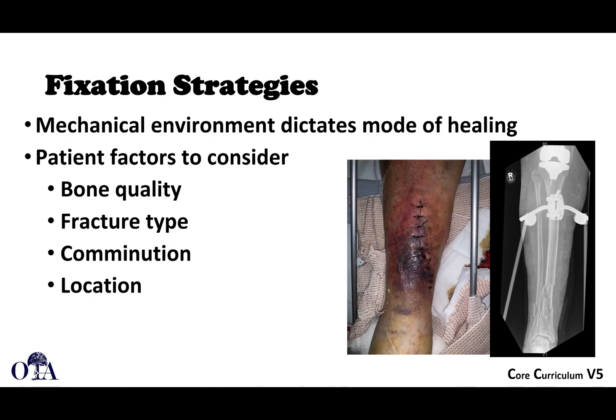The mechanical environment dictates the mode of healing, but there are other factors to consider: bone quality, fracture type, comminution, location, and soft tissues — we really haven't talked about that at all. Here you can see an example of an open fracture where the wound looked like that. This is something where you may not be able to go after all those fixation principles right away that we talked about.